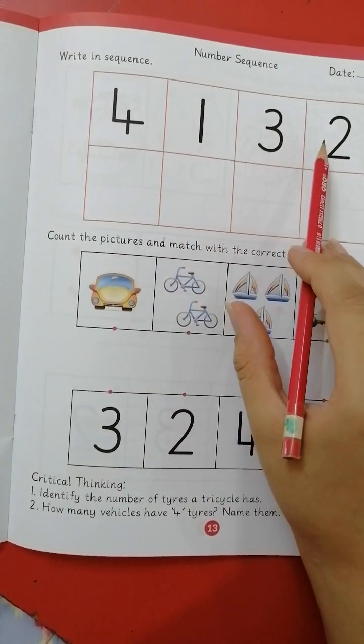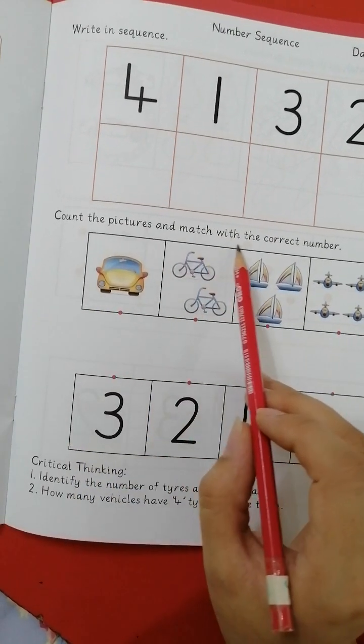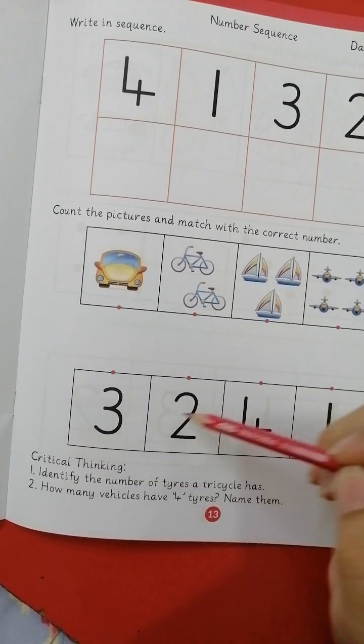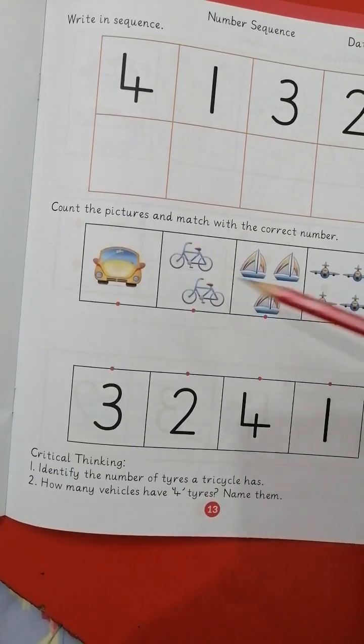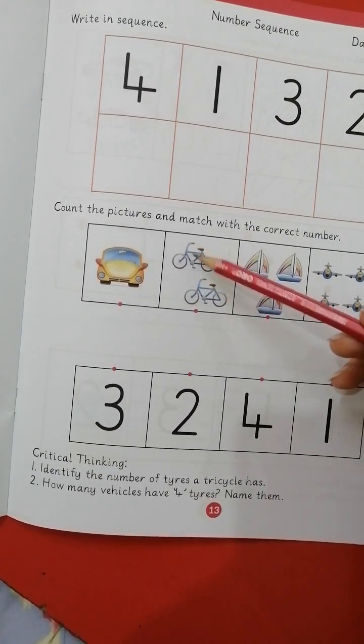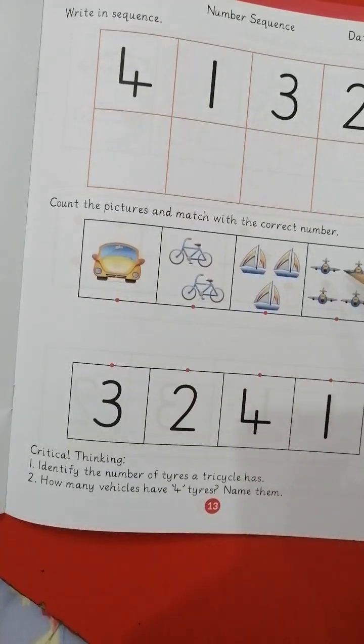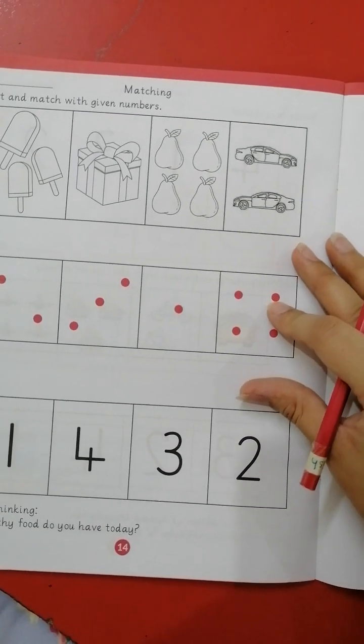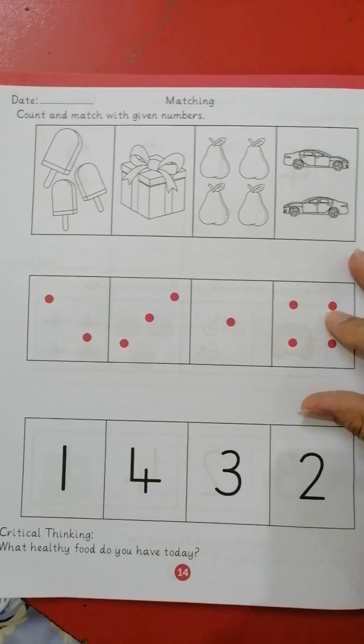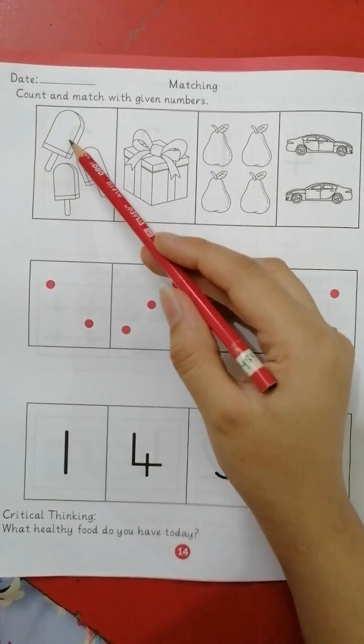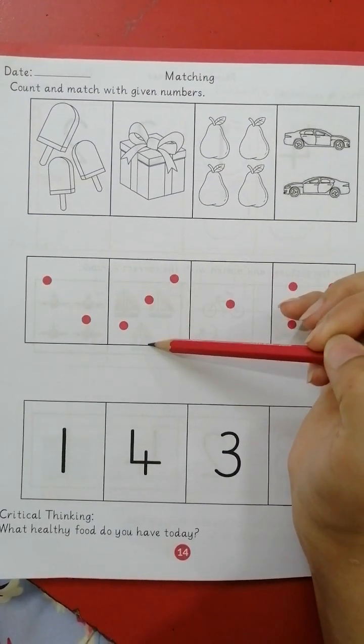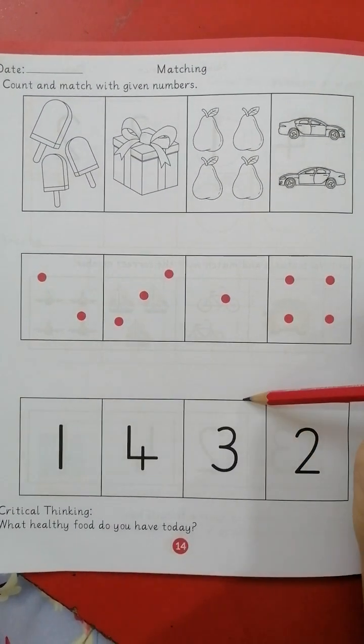Count the picture and match with the correct number. We have some pictures over here and numbers over here. You have to count and match: one car, two bicycles, three boats, four jets. Next is count and match with the given number. We have three ice creams over here and three dots over here. Match it. And match this three dots with the three.